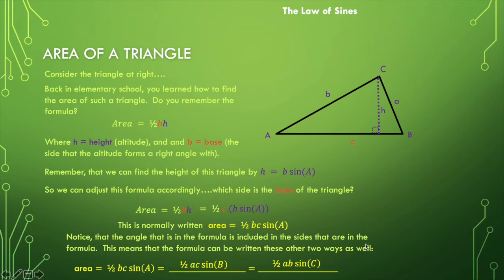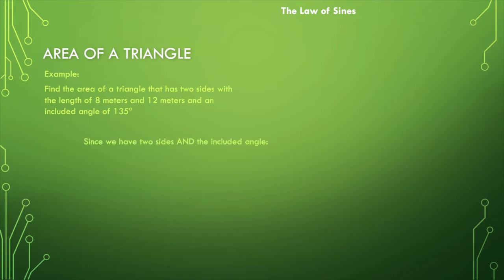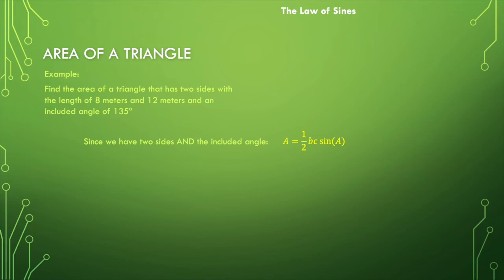Let's take a look at an example. We have a triangle where we know two side lengths: one measures 8 meters, the other measures 12 meters, and the included angle is 135 degrees. Since we have two sides and the included angle, all we have to do is substitute into our formula. The area equals one-half times side b times side c times the sine of angle A — we don't need to formally assign labels, we just substitute the values directly.